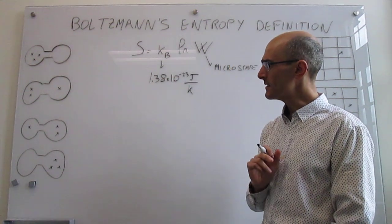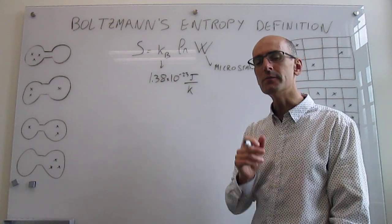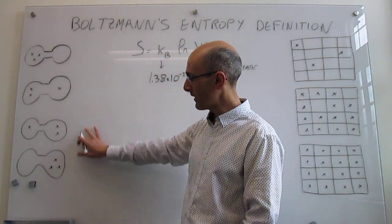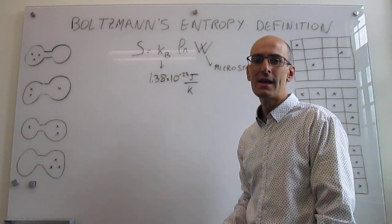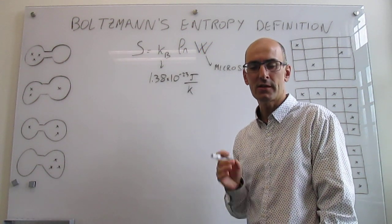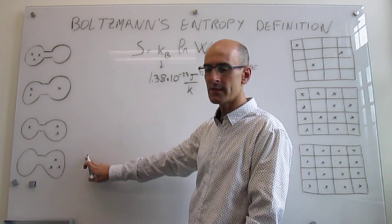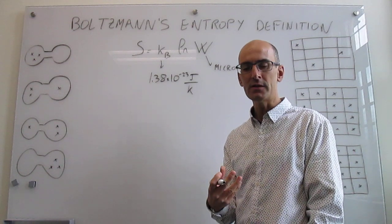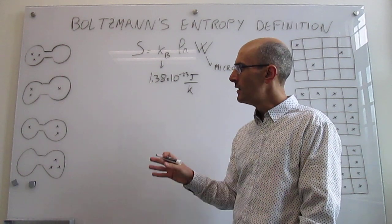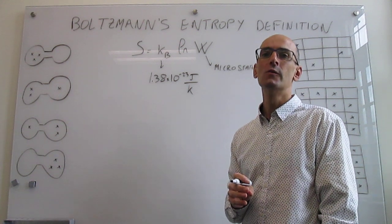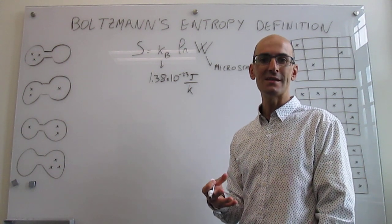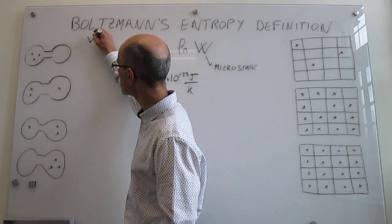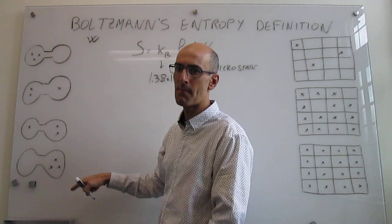The situation of higher entropy would be the macrostate which has the largest number of microstates — the macrostate that is favored would be the one with the largest number of microstates. With this positional definition, a microstate is the number of ways that you have to create that macrostate. Let's figure out what the microstate number is for each one of these macrostates.